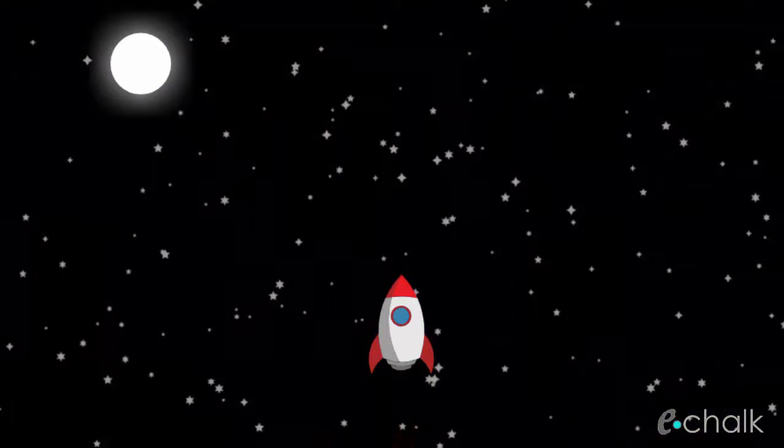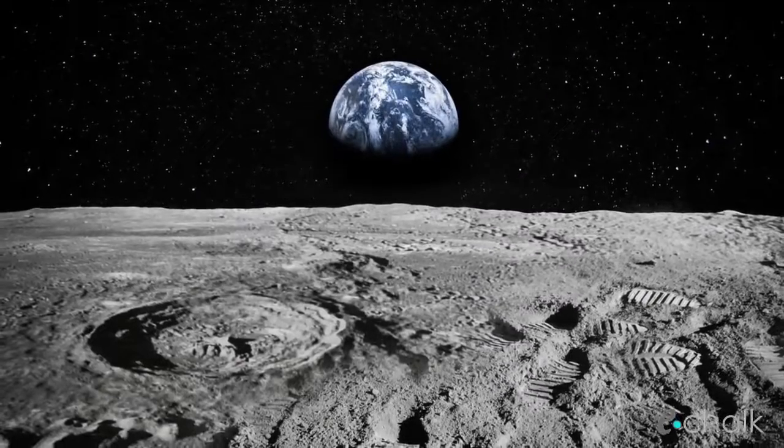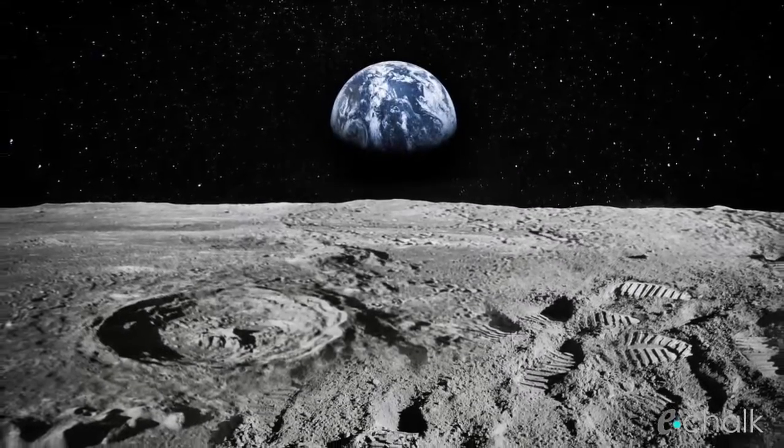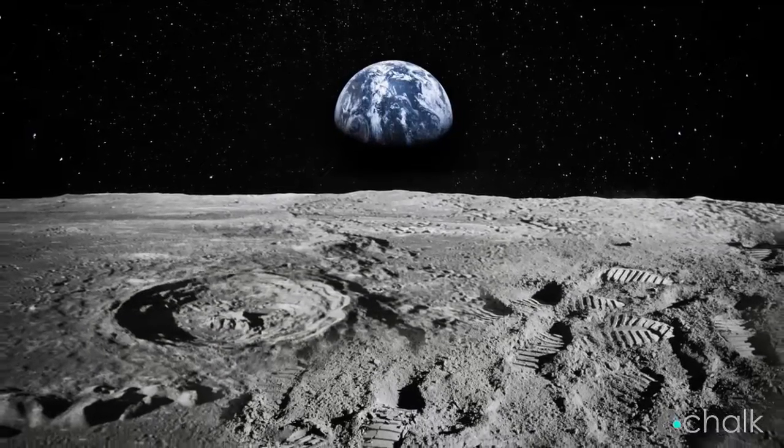Though from space, the sun would be a bright white rather than a yellow. The moon by contrast has no atmosphere, so a person on the lunar surface can look straight out into the blackness of space where the stars are always visible.